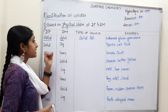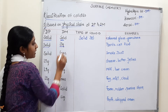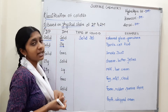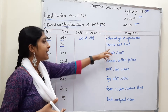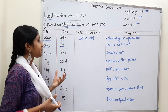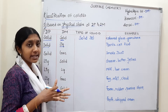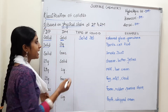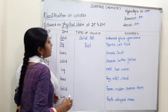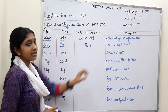Second type: solid is the dispersed phase and liquid is the dispersion medium. The type of colloid is called Sol. Examples include paint and cell fluids.